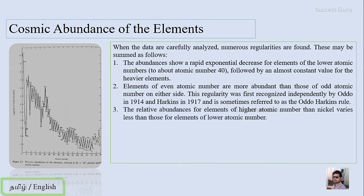The third observation is that the relative abundances for elements of higher atomic number than nickel vary less than those of elements of lower atomic number. You can see here the nickel element, and after that the elements are almost nearly in the same abundance, whereas for atomic numbers lower than nickel the variation is very high.